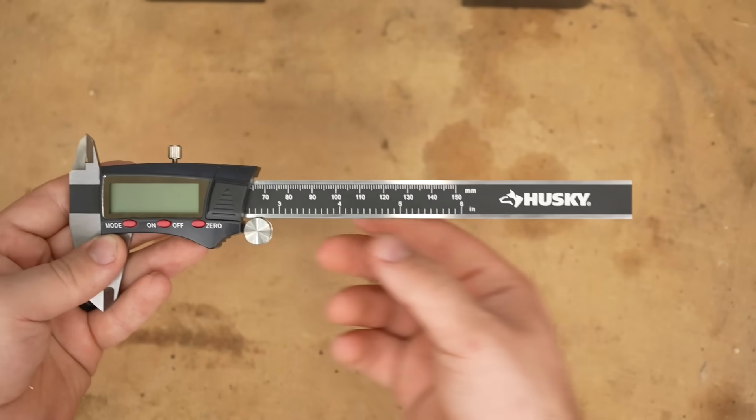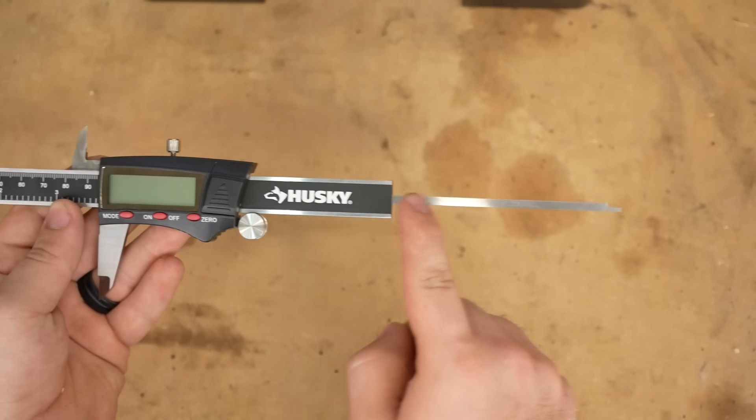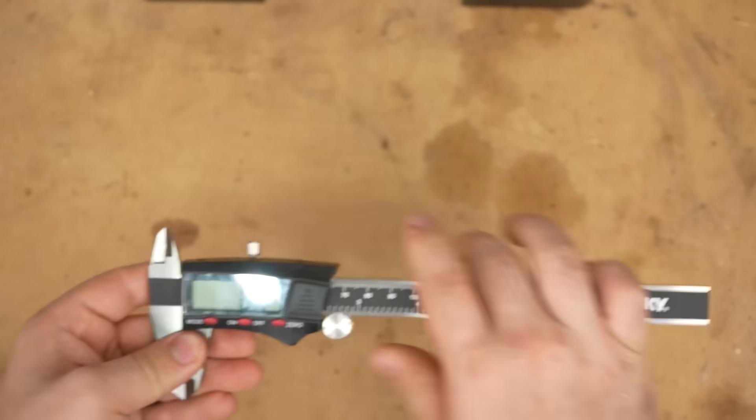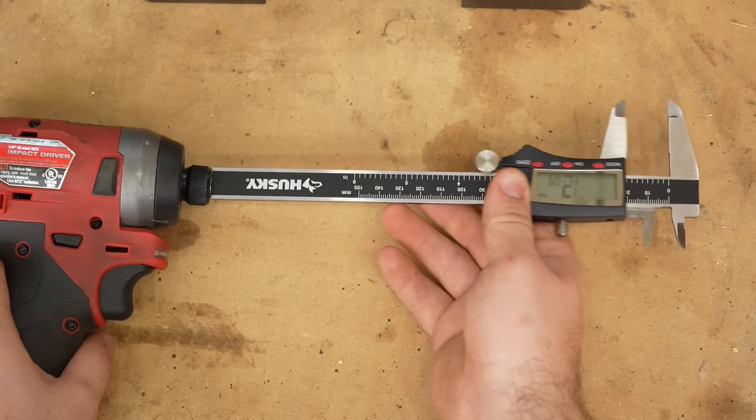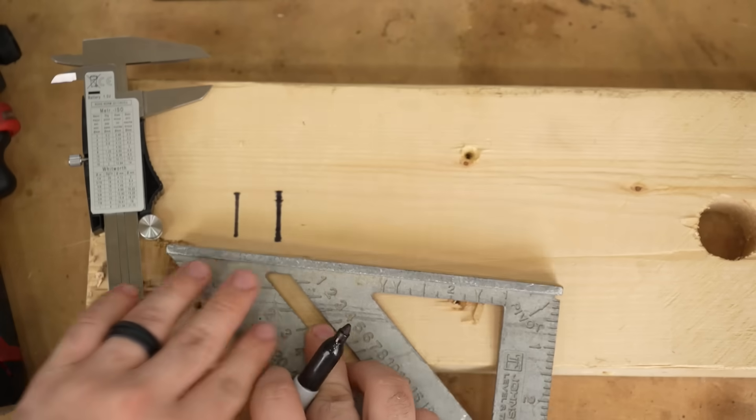Next, we have a depth measurement tool. Measuring the depth of something is done with the rod that extends from the end of the calipers. This is set on the edge and the rod is extended into the crevice to measure depth. Again, ensure the calipers are sitting as flush as possible. The notch on the rod is also an important thing to keep in mind.